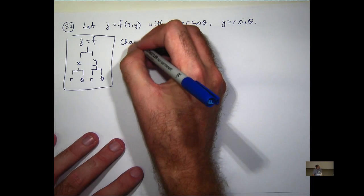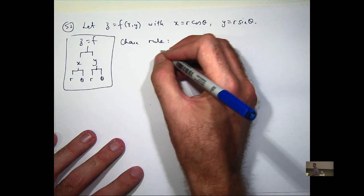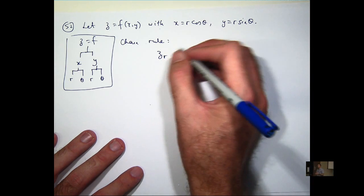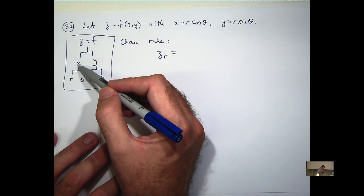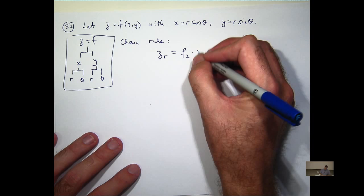So the chain rule gives us the following. Let's calculate it with respect to r, dz/dr. What's it going to be? df/dx times dx/dr. I'm just going to write subscripts just to save a bit of space.